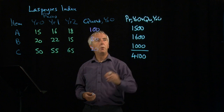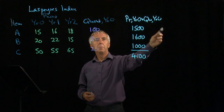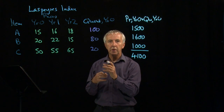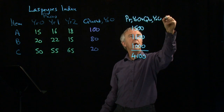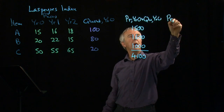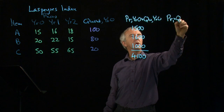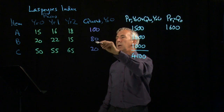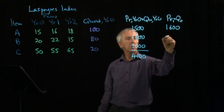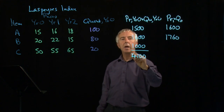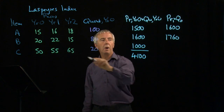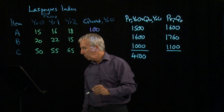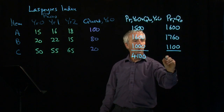We now do the same for year one, but still using the same quantities — we assume that the amount of each item bought is the same in successive years. So now we get the price in year one times the quantity in year zero: 1,600, then 80 times 22 which is 1,760, and 20 times 55 which is 1,100. We add those up and we get 4,460.